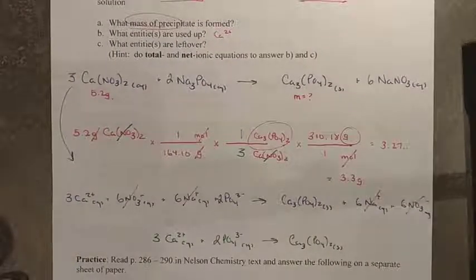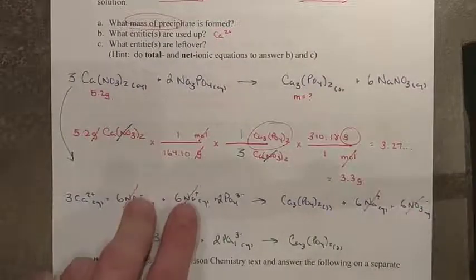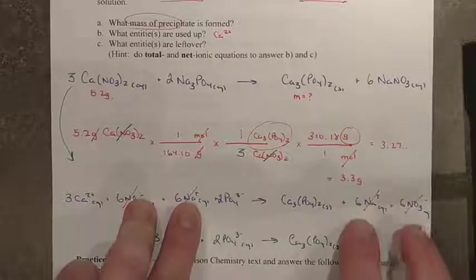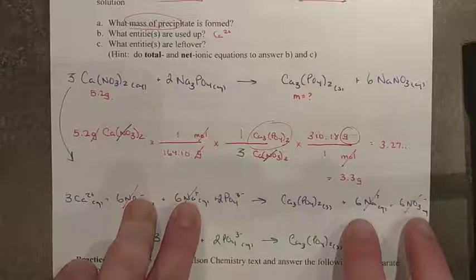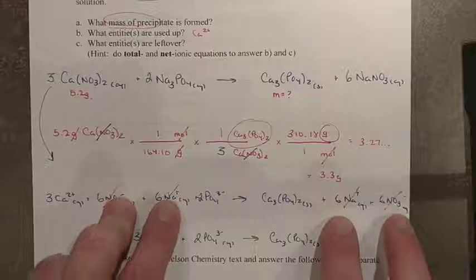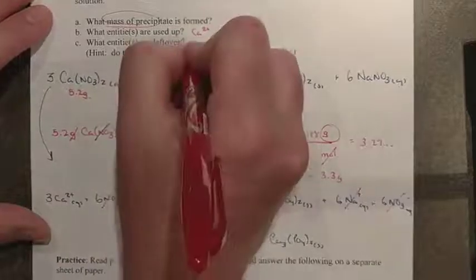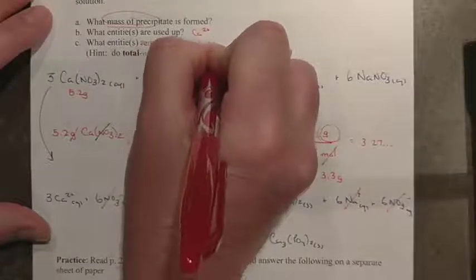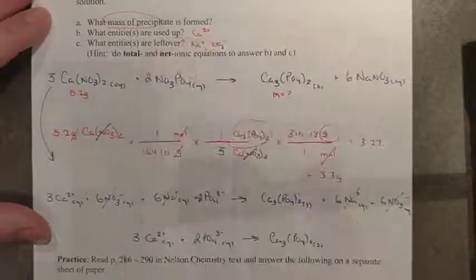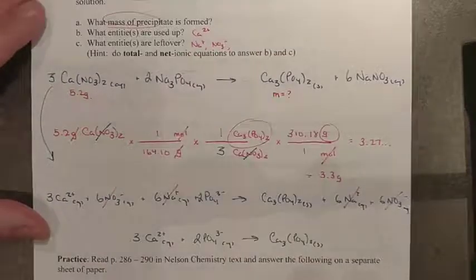What entities are left over? Well, two very obviously. The nitrate and the sodium, because they were spectator ions, were not used in the reaction at all. Therefore, they must be left over after this is done. So my Na+ and my NO3- must be left over in their original quantities.